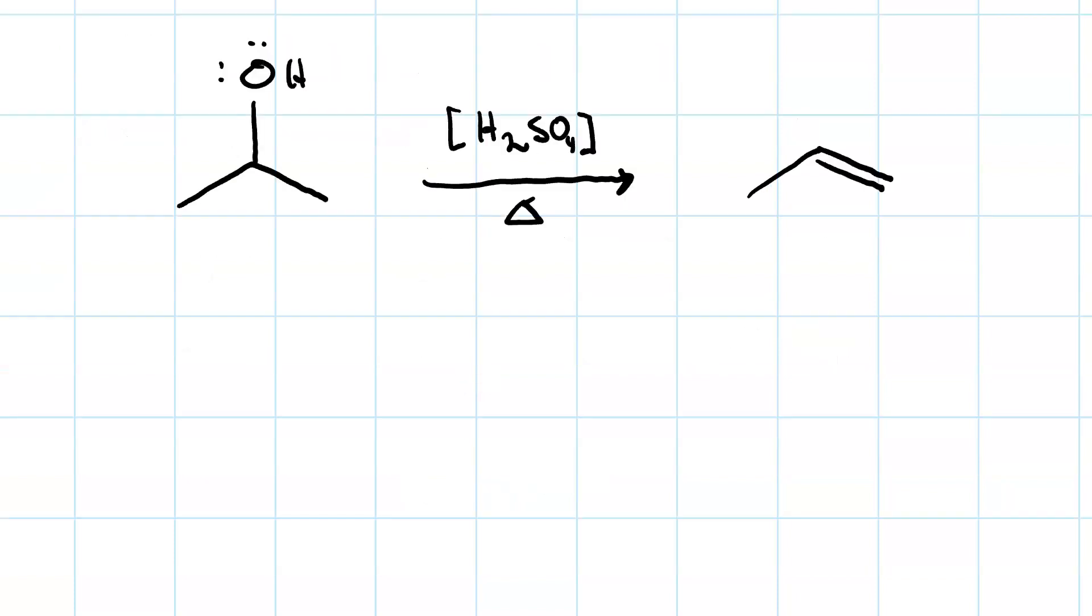Let's go through the mechanism. So this is going to go E1, which means we have to have loss of a leaving group, followed by proton transfer.